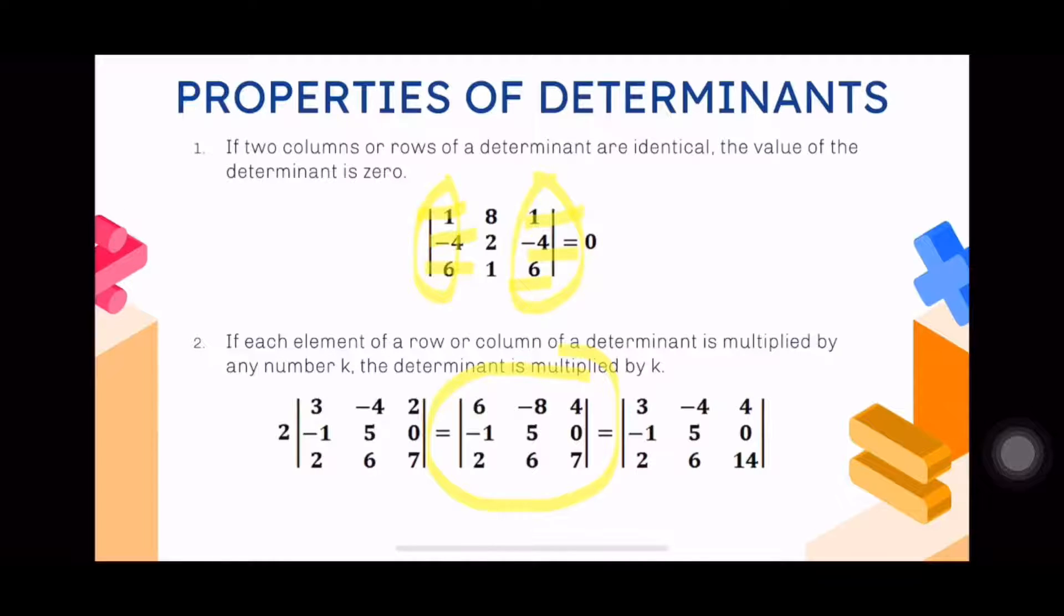Looking at the determinant in the middle, the first row is six, negative eight, four; second row is negative one, five, zero; third row is two, six, seven. The first row are all multiples of two. If you factor that out from the first row only, you'll get two factored out and multiplied to the resulting determinant, which is now three, negative four, two; negative one, five, zero; and two, six, seven. Notice there's no change on the second and third rows.